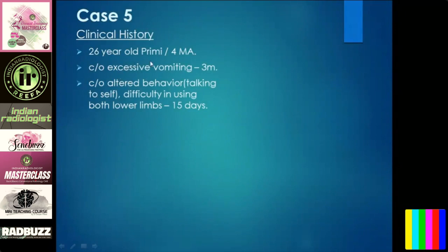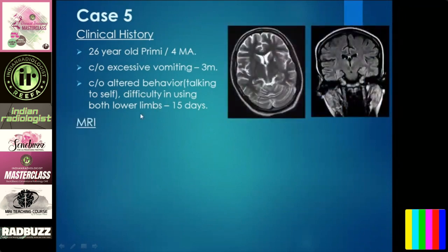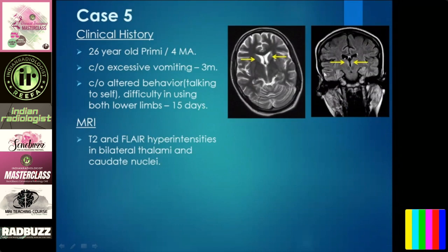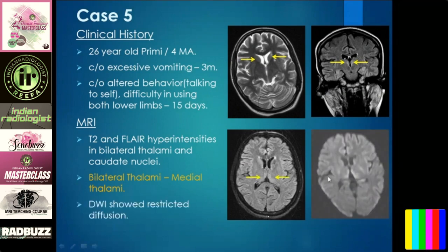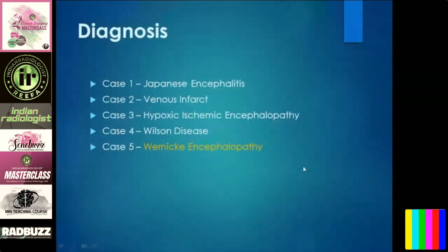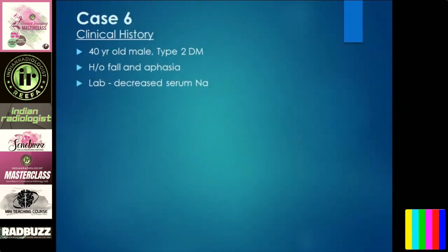Case five: a 26-year-old primigravida with excessive vomiting and altered behavior — talking to self and difficulty using both upper limbs. MR imaging showed T2, FLAIR hyperintensity of bilateral thalamus and caudate nuclei. In this condition, the thalamus is most commonly involved, specifically the medial thalamus, sparing the lateral part. Diffusion showed restricted diffusion. This was a case of Wernicke's Encephalopathy.